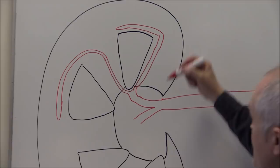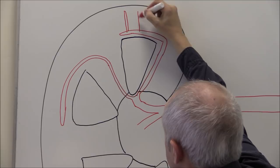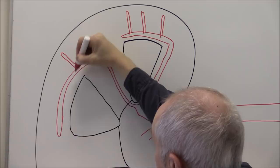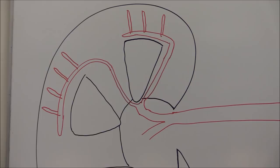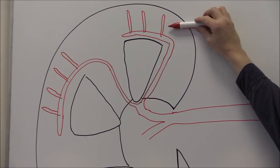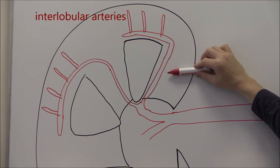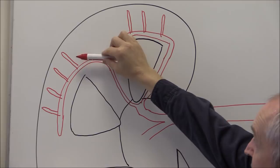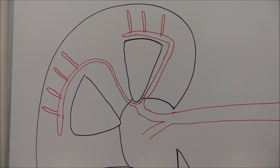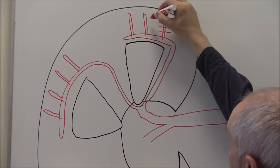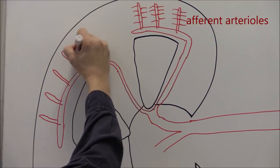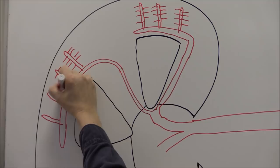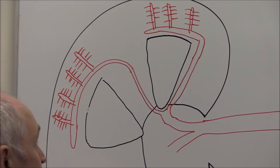From the arcuate arteries, numerous smaller arteries branch upward. There are going to be small arterial vessels branching off all the arcuate arteries. These are called the interlobular arteries — obviously much smaller than the interlobar arteries. From the interlobular arteries, numerous individual arterioles branch off, and these are the afferent arterioles branching off the interlobular arteries.